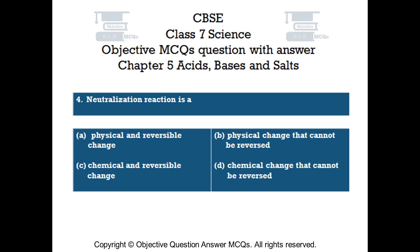Question number 4. Neutralization reaction is: Option A, a physical and reversible change. Option B, a physical change that cannot be reversed. Option C, a chemical and reversible change. Option D, a chemical change that cannot be reversed.